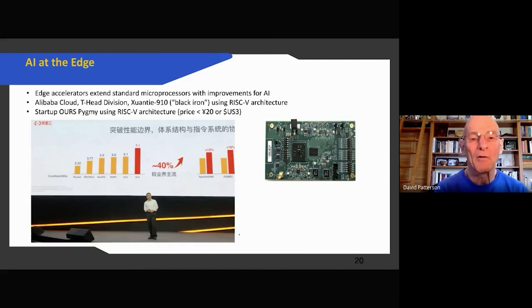That's a tour of using domain-specific architectures for the cloud. What about the edge? Here's two examples. The first one is from Alibaba, they're called the Xuantie 910, and then a startup company also using RISC-V like the Xuantie 910, but it's a very inexpensive computer intended for internet of things devices.